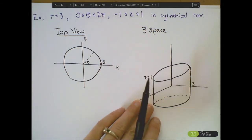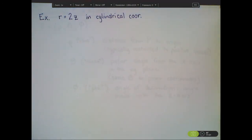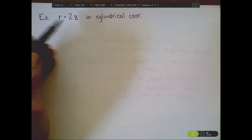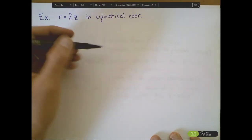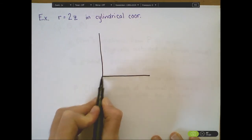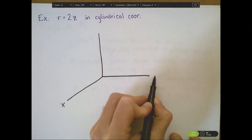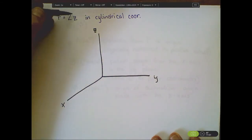The final coordinate system that I want to talk about is the most challenging. Let's do one more example. So, r equals 2z. Let's just go straight to our three-dimensional plot.